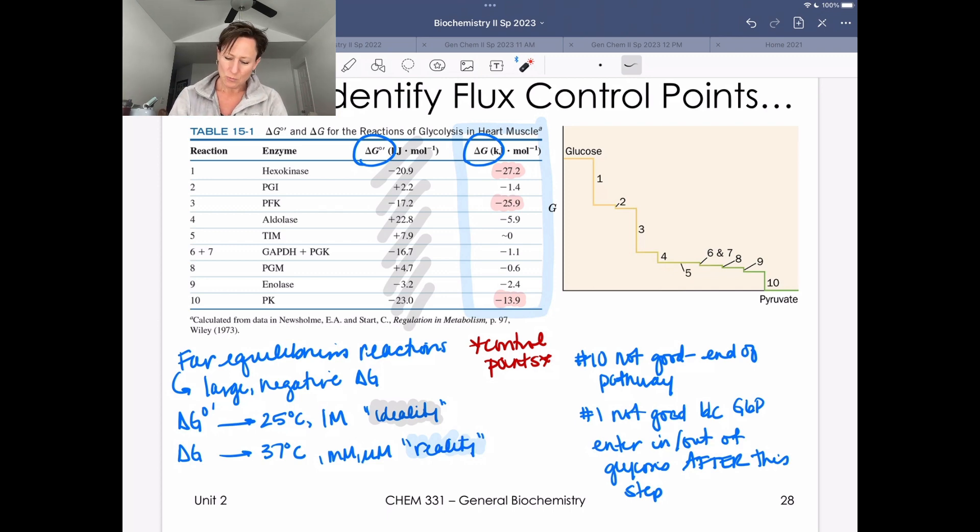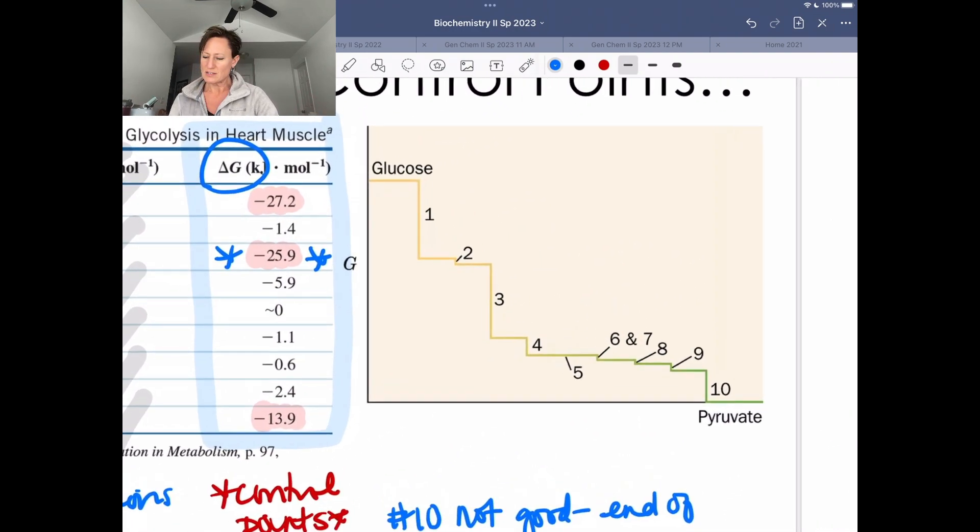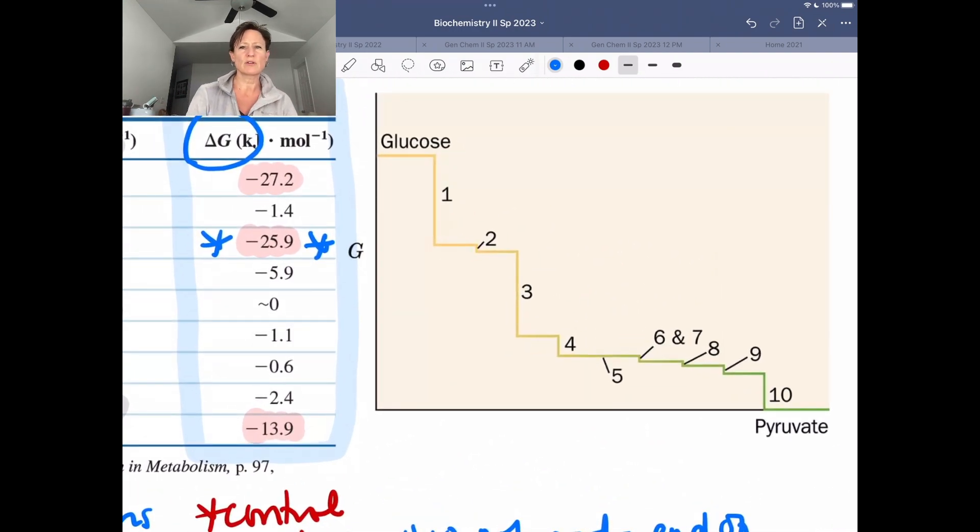Okay. So now we know that we are going to have PFK be our control point in glycolysis. So the last little thing here is just to highlight over on this figure. It's going to reinforce some of the things that we've already talked about. This is a little plot that kind of shows us, remember when you look at a plot, always look at your axes.